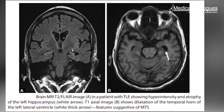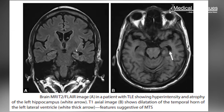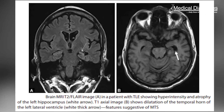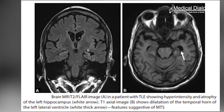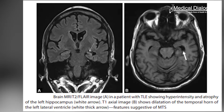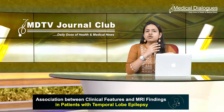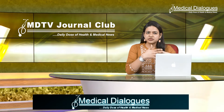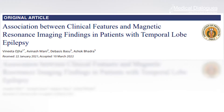Temporal lobe seizures are commonly called focal seizures with impaired awareness. Temporal lobe epilepsy is known to be the most common cause of partial seizures. However, there is not much known about the correlation of their clinical features with specific imaging findings that can be seen on an MRI.